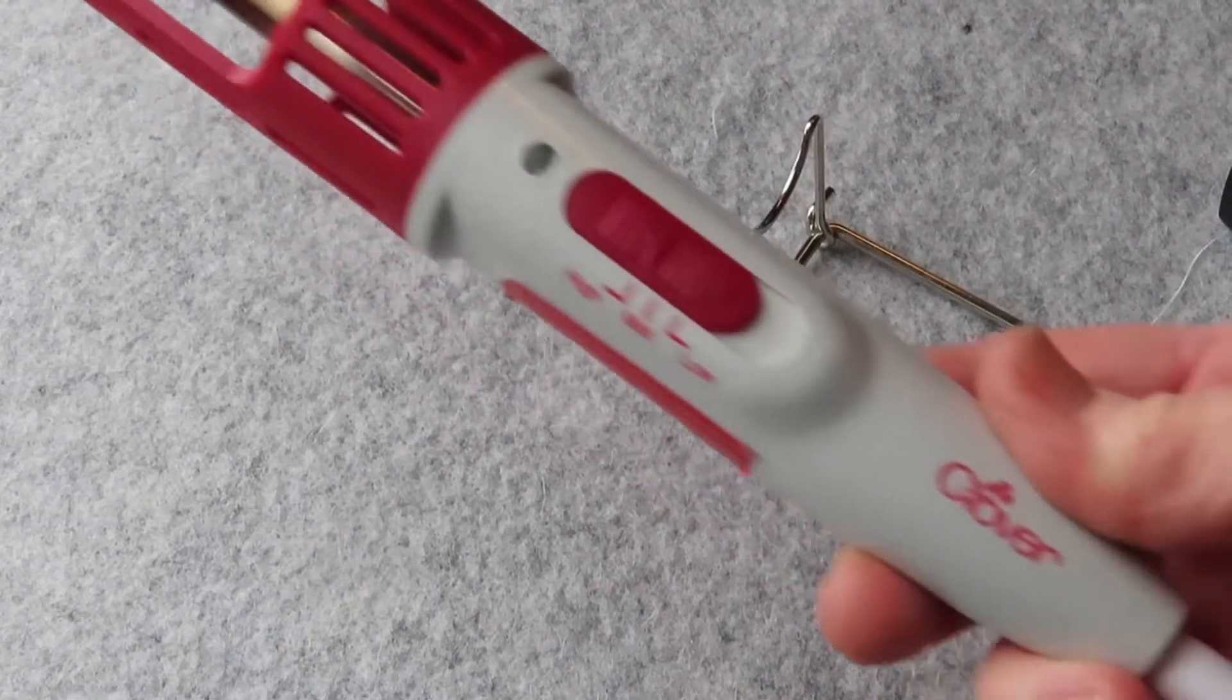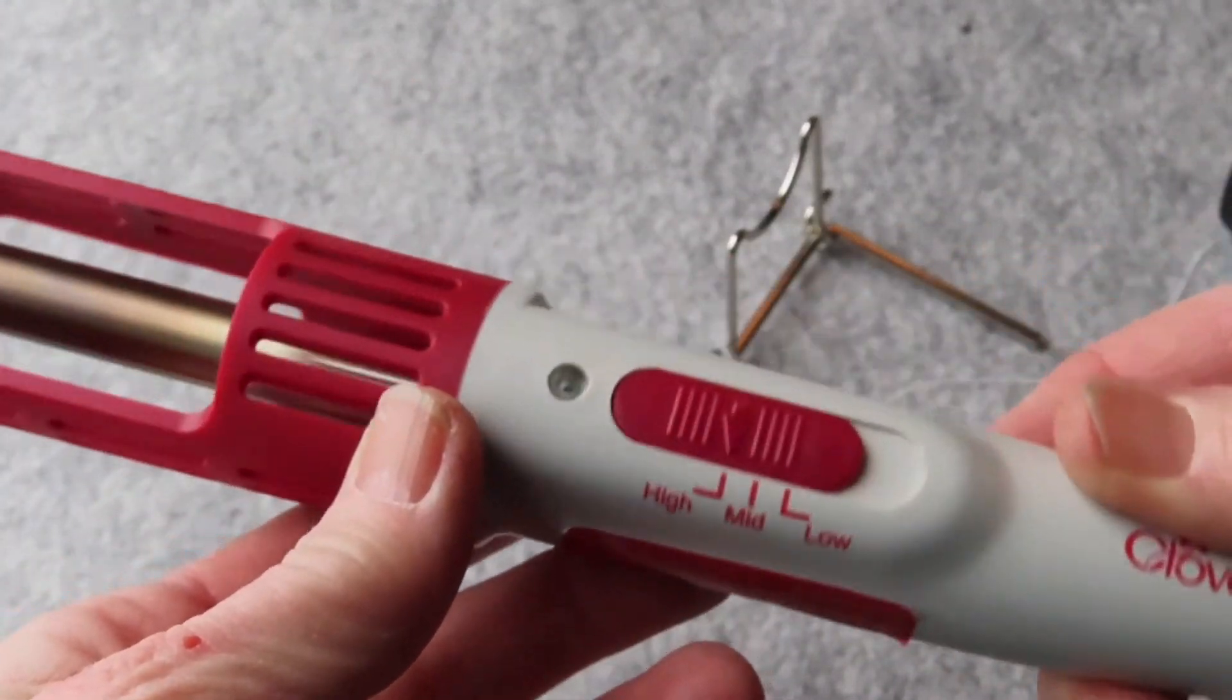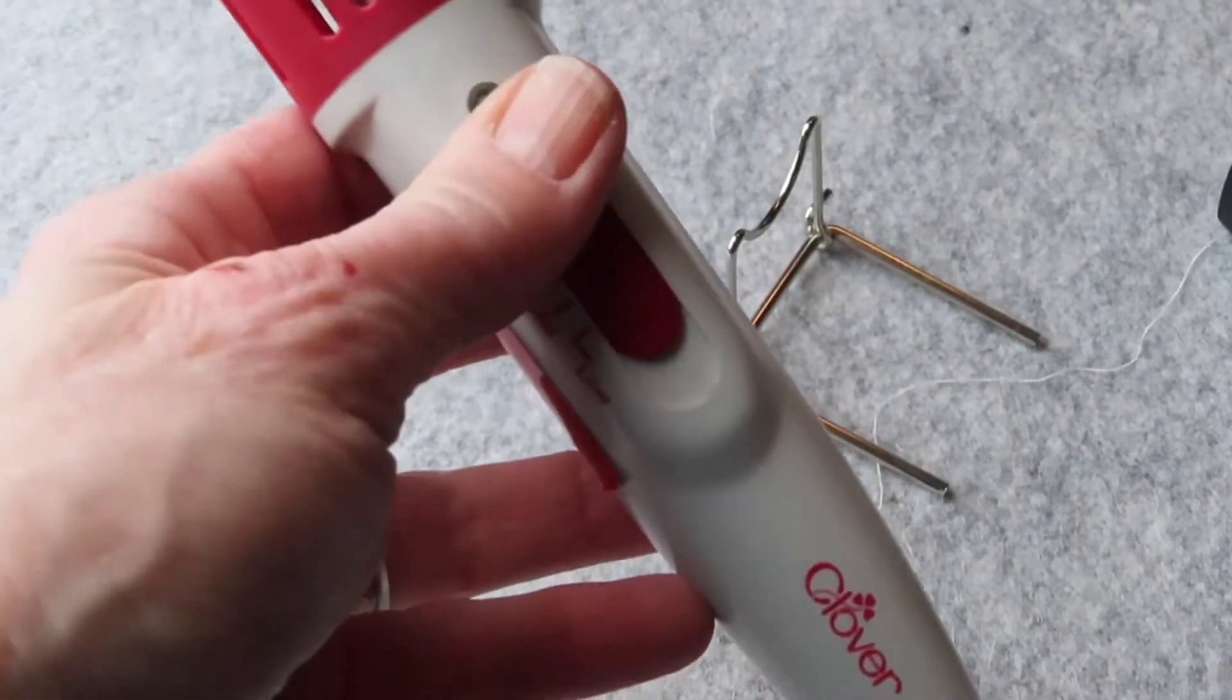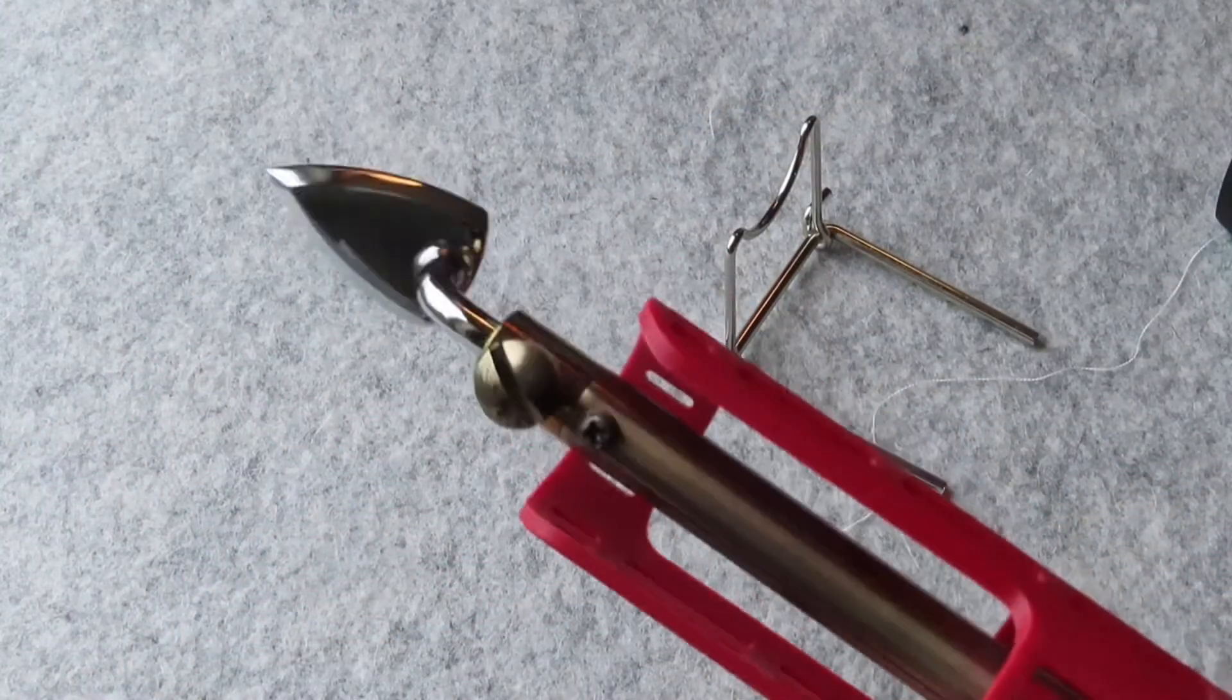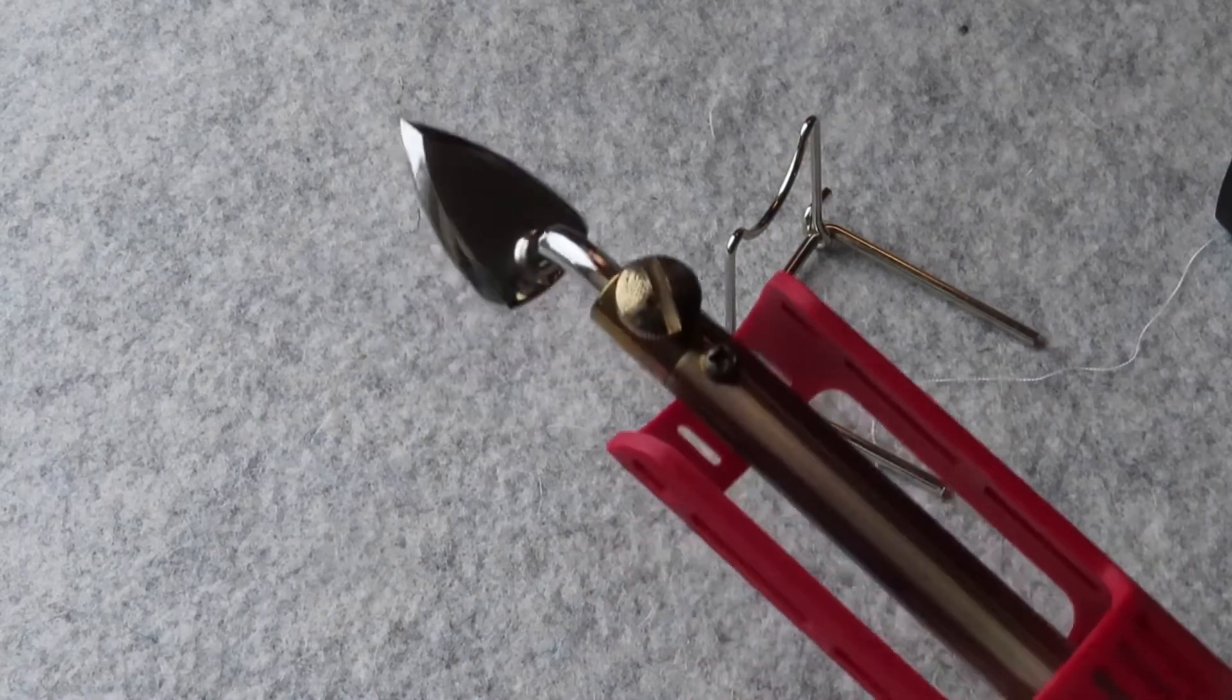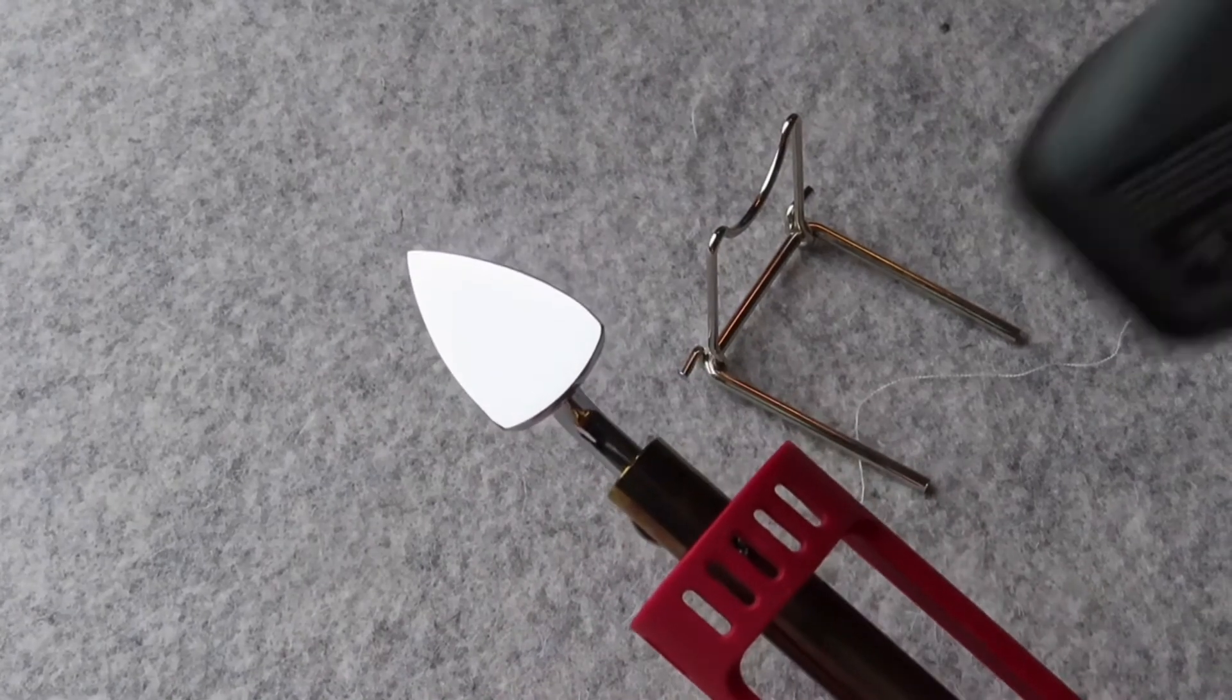This little iron is made by Clover. It's got a high and low setting. I've got it set on high right now. Oh, and also medium. It also has a separate switch on the cord. And you can change out the heads on this one. So I've got the iron on it right now. So let's see how hot that's getting.